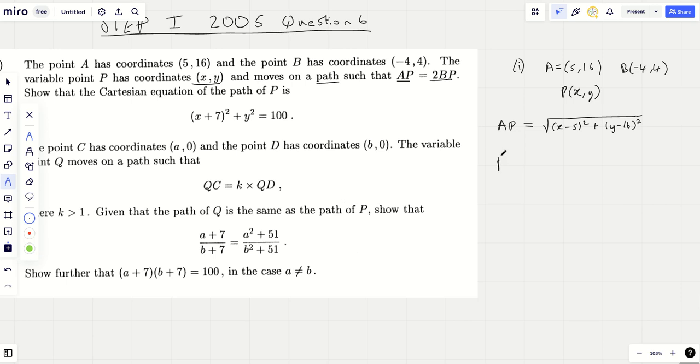This is like a loci question with coordinate geometry, really, because we're looking at something which moves on a path. I can't really see much else to do here other than say, let's try and find the length AP. The length AP is simply going to be the square root of (x-5)² plus (y-16)².